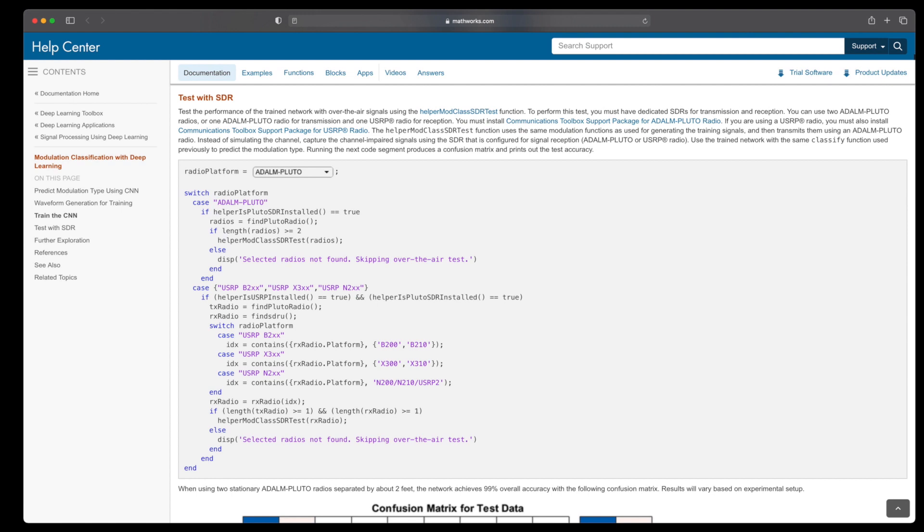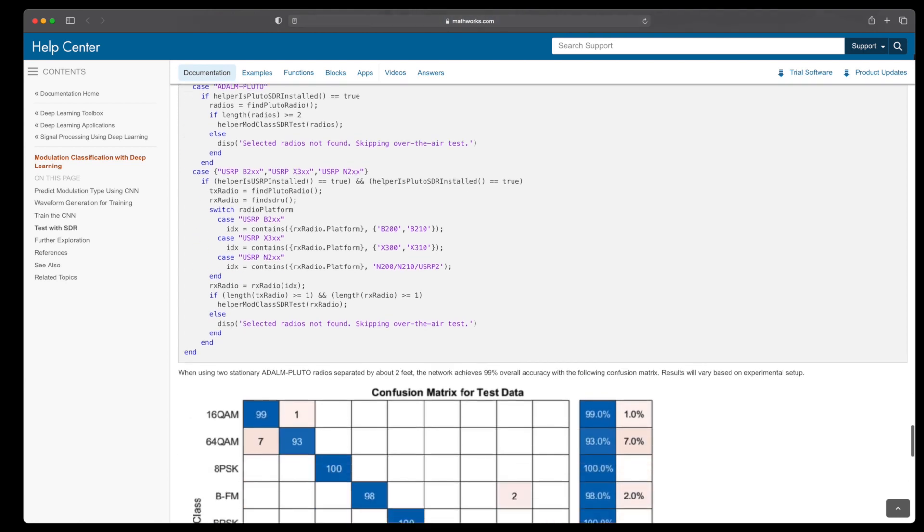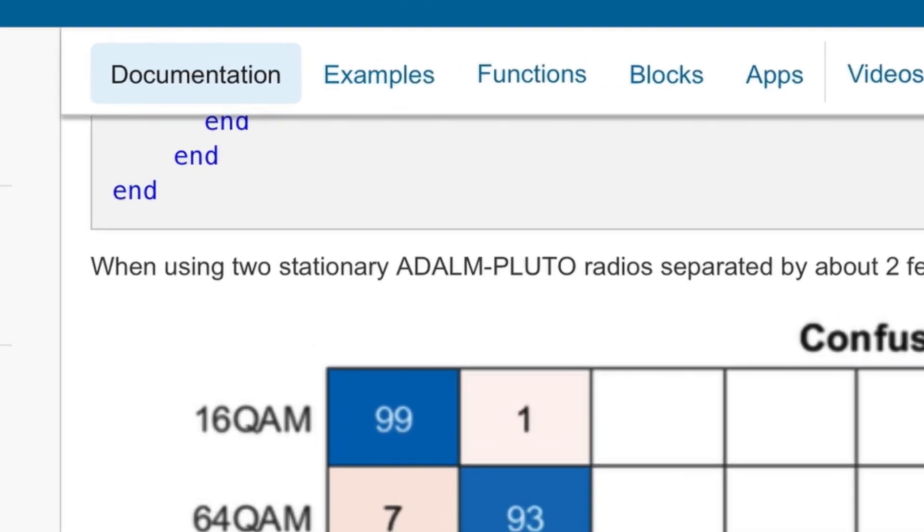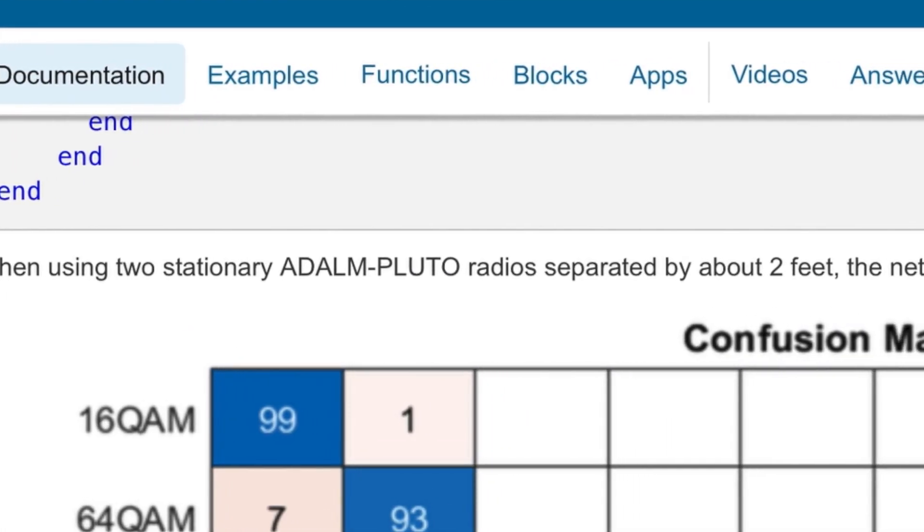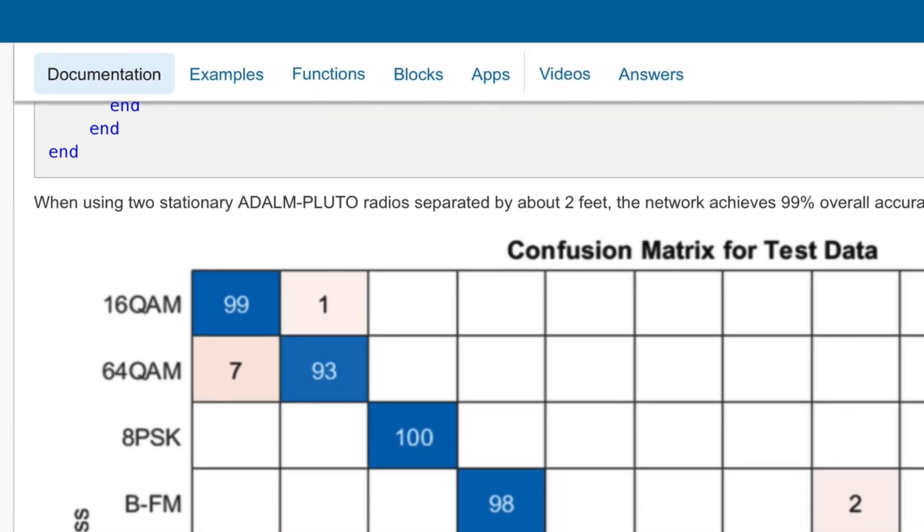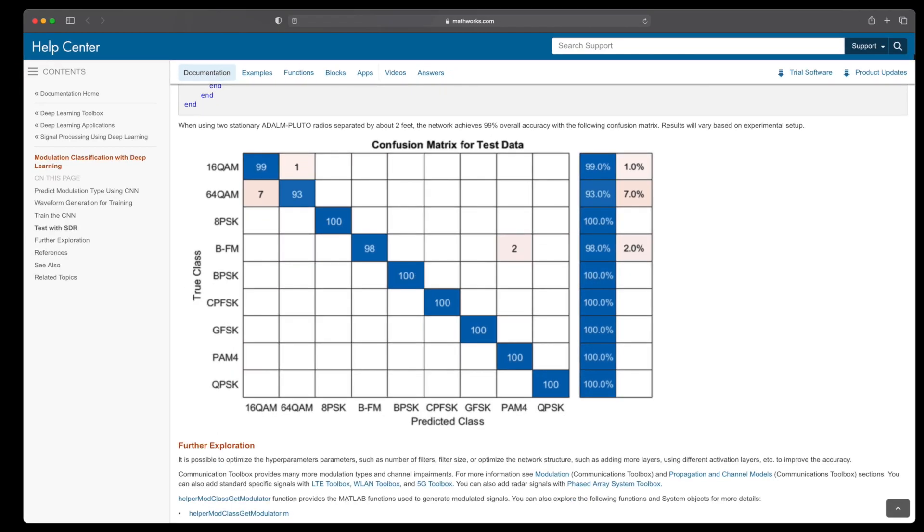And according to the confusion matrix, it does a really good job. About 99% overall accuracy, which seems amazing. But we have to consider that in this test, the two radios were stationary and placed two feet from each other, which would limit the amount of propagation noise and multipath fading and maybe other things. So these were relatively clean signals. The real test would be to validate this network on hardware that is put in a more realistic scenario.